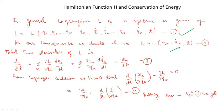Now, if we differentiate equation 2 with respect to time, then we can find dL/dT = Σk (∂L/∂Qk)(dQk/dT) + Σk (∂L/∂Qk-dot)(dQk-dot/dT) + ∂L/∂T. Let us call this equation 3. Here sigma is used to sum over all the generalized coordinates.